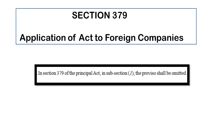The next amendment is in section 379, which deals with the application of the act to foreign companies. In section 379 sub-section 1, the proviso shall be omitted.